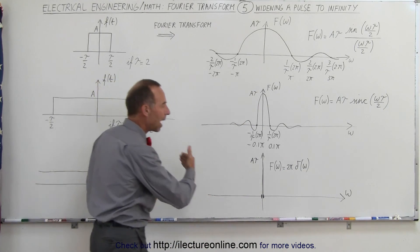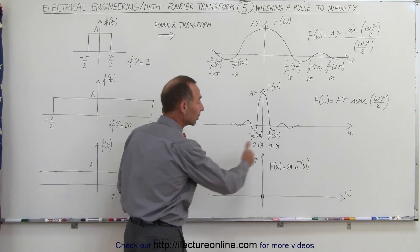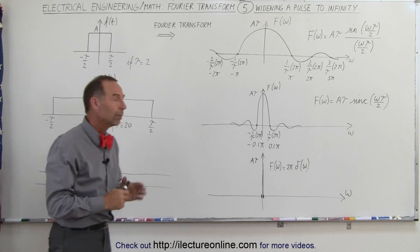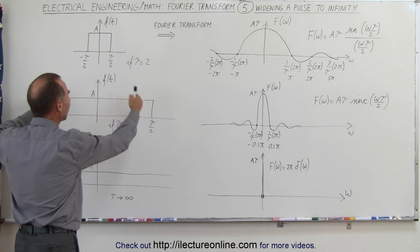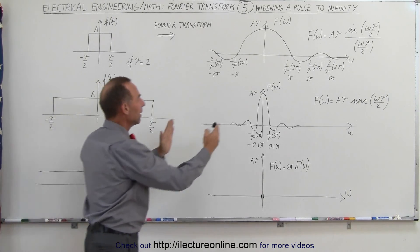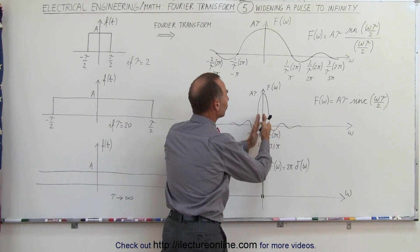In a later video, we'll show you how the Fourier transform can be calculated to be equal to this amount. But here you can simply see that in the limit, as you begin to widen the pulse, it narrows the transfer function, the Fourier transform.